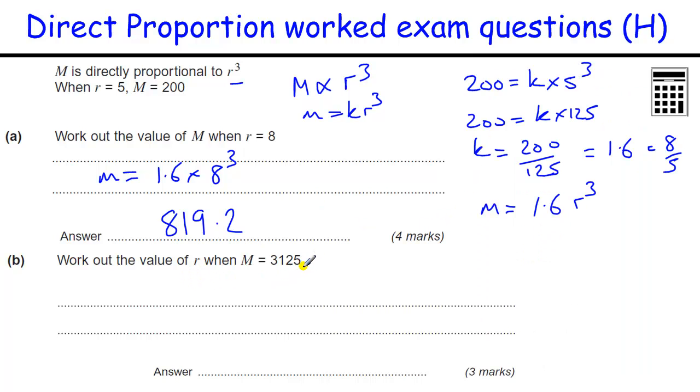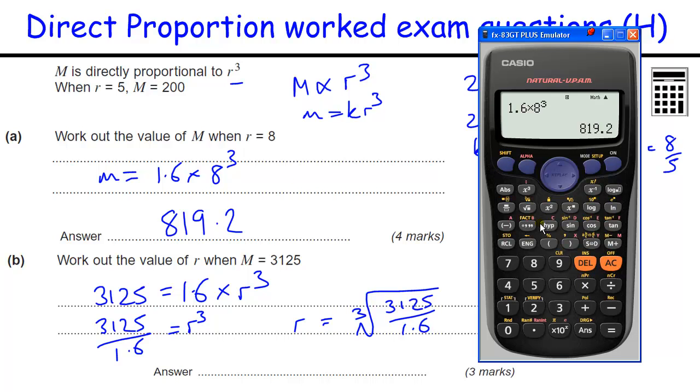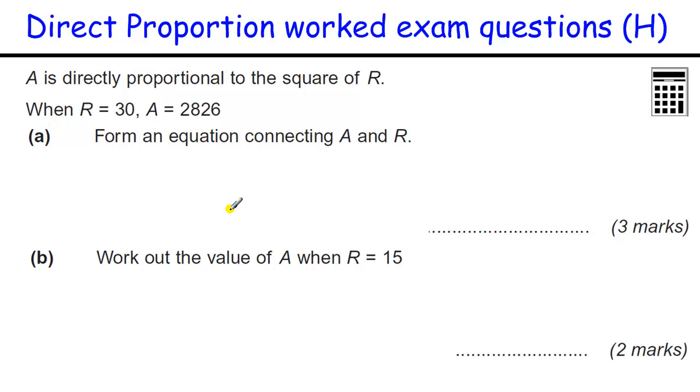Work out the value of R when M is 3125. Working backwards, we are given that and we know our formula. So we need to divide 3125 by 1.6 and that gives us R cubed, and then we need to do the cube root to find R. The cube root of 3125 over 1.6. Again calculator, the cube root is just there, shift cube root, I'm going to use a fraction, 3125 over 1.6, and the answer is 12.5. Don't forget to check these in an exam. Put 12.5 back in, cube it, times by 1.6, and hopefully you'll get that value there.